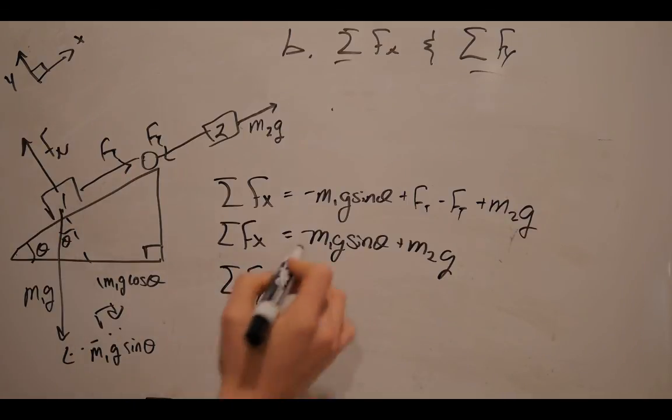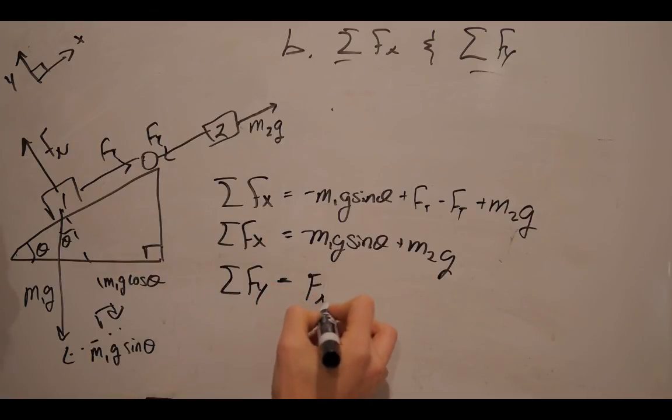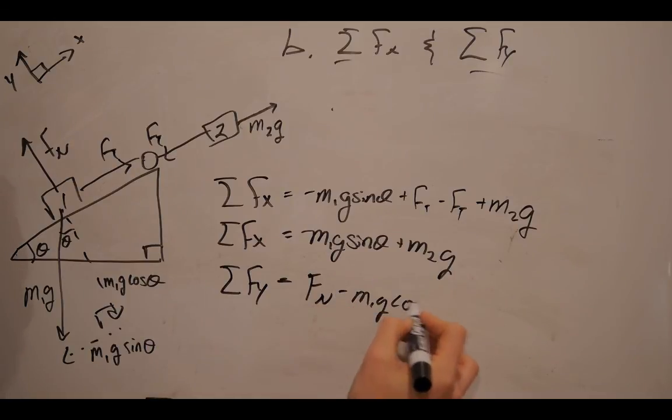We have F of n going up, and I'm going to make anything going up positive. And then we have M1g cos theta going down, and I will make anything going down negative. So, there we have it, our two net force equations.